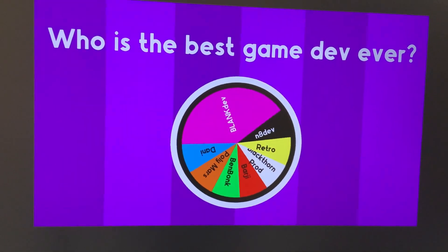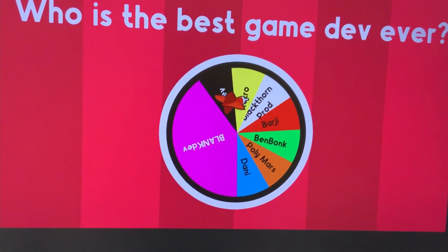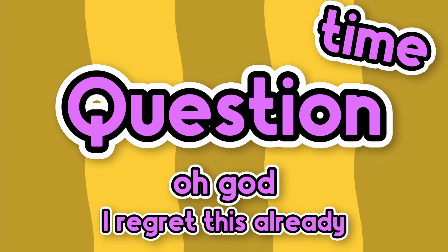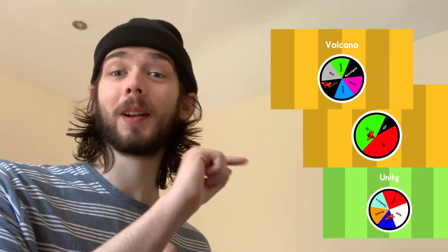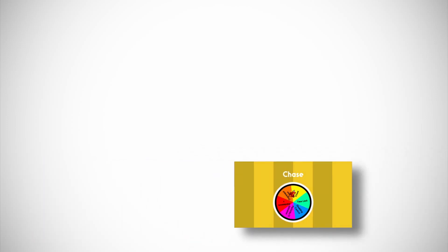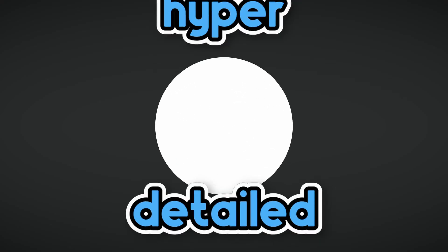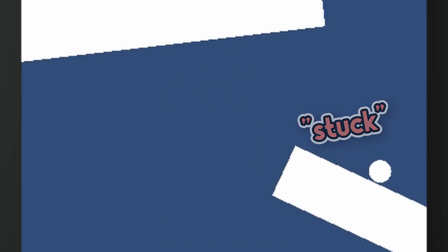We can ask our new and totally unbiased friend to make decisions for us. The result: a Unity game that's 2D, set in a volcano where you play as a blob that is being chased. The volcano has erupted and you have to run away from it. You play as a hyper-detailed blob man controlled by holding down a button to fly up or letting go to fall down. The catch is friction is left on, so you get stuck to surfaces as you touch them, slowing you down.